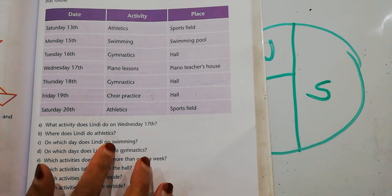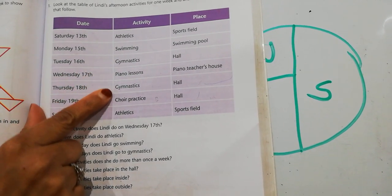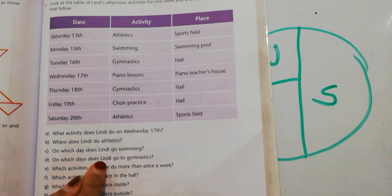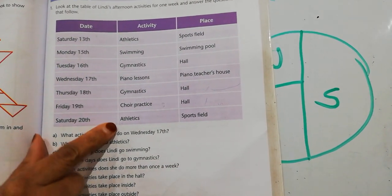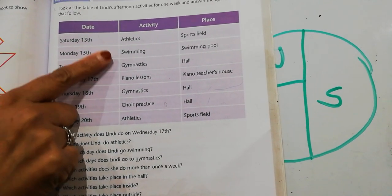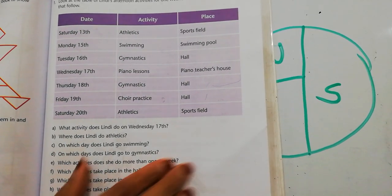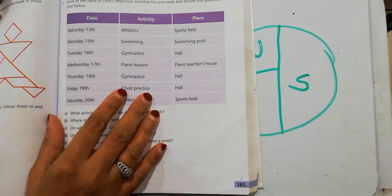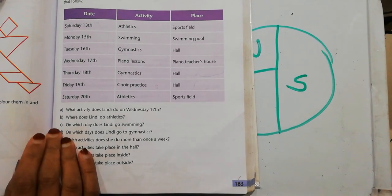On which days does Lundy go swimming? So when you look, you'll see she goes on a Monday. So she goes on a Monday only. On which days does Lundy go to gymnastics? Go through all her activities. Because as you can see, gymnastics is two days. Swimming is one day. Piano lessons, one day. Athletics is two days. So you're going to answer these questions about this table. That's all. Chuzakala.